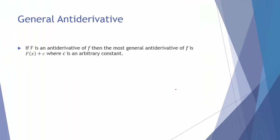Because of that, what we generally talk about is the general antiderivative. So if capital F is one possible antiderivative of lowercase f, then the most general antiderivative of lowercase f is capital F plus C, where we call C an arbitrary constant. It's understood that it represents just some constant.